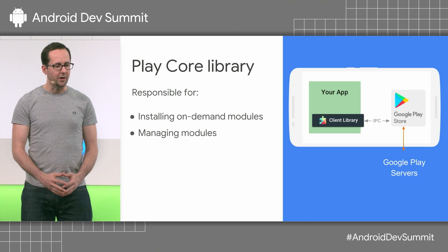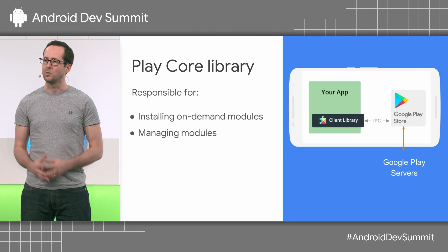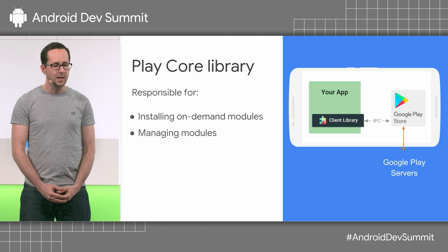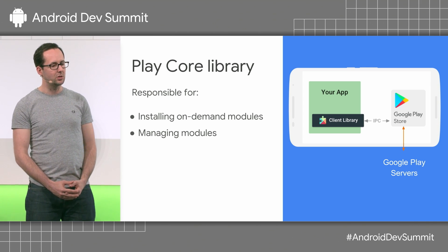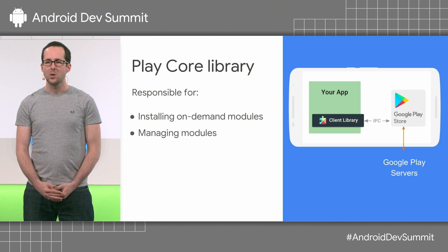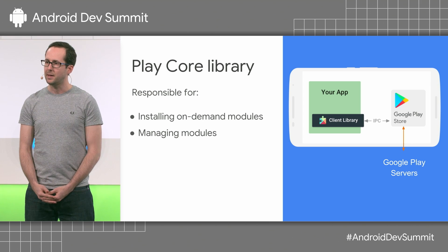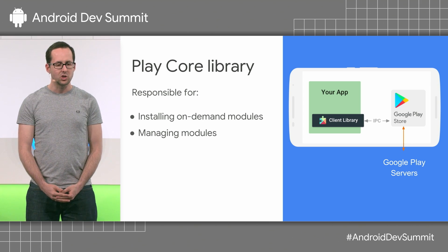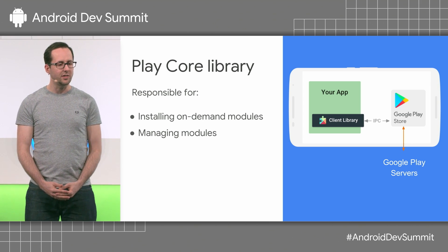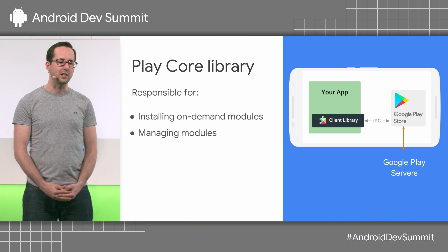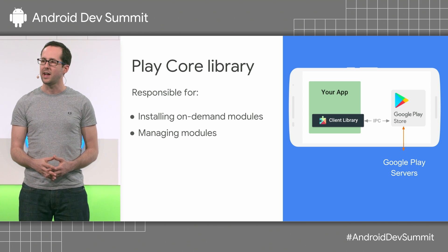Now that we've created our on-demand modules, let's write the code to download them. In order to interact with the Play Store to request these on-demand modules, we have to use the split install API, which is part of the Play Core library. This is a Java client library that communicates with the Play Store via IPC.